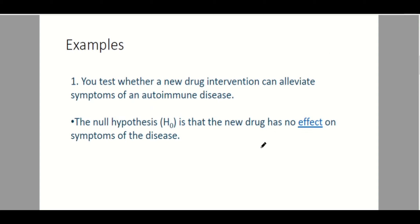Example 1: You test whether a new drug intervention can alleviate symptoms of an autoimmune disease. Our null hypothesis here is that the new drug has no effect on the symptoms of the disease. With this, we will look at type 1 and type 2 errors.